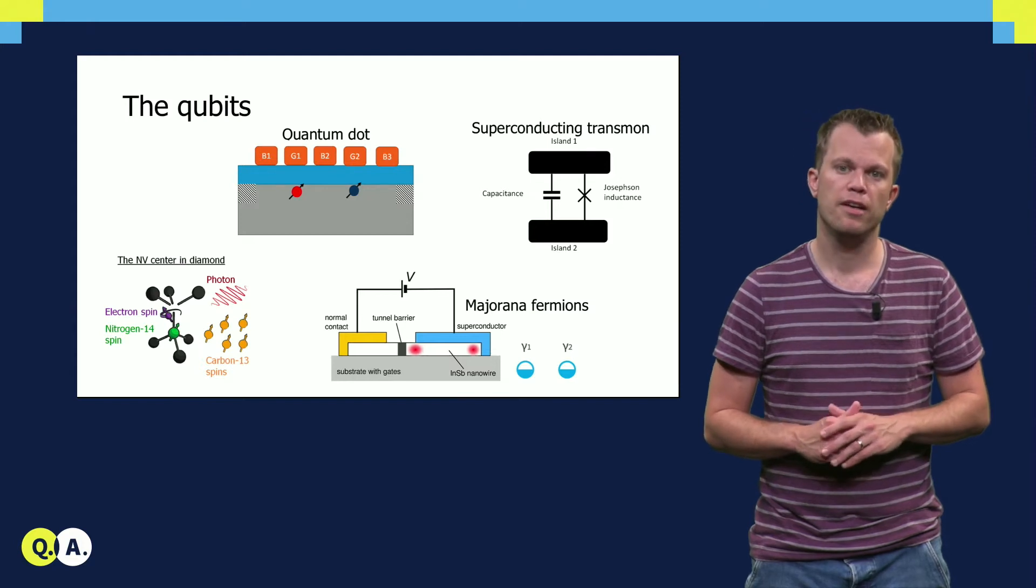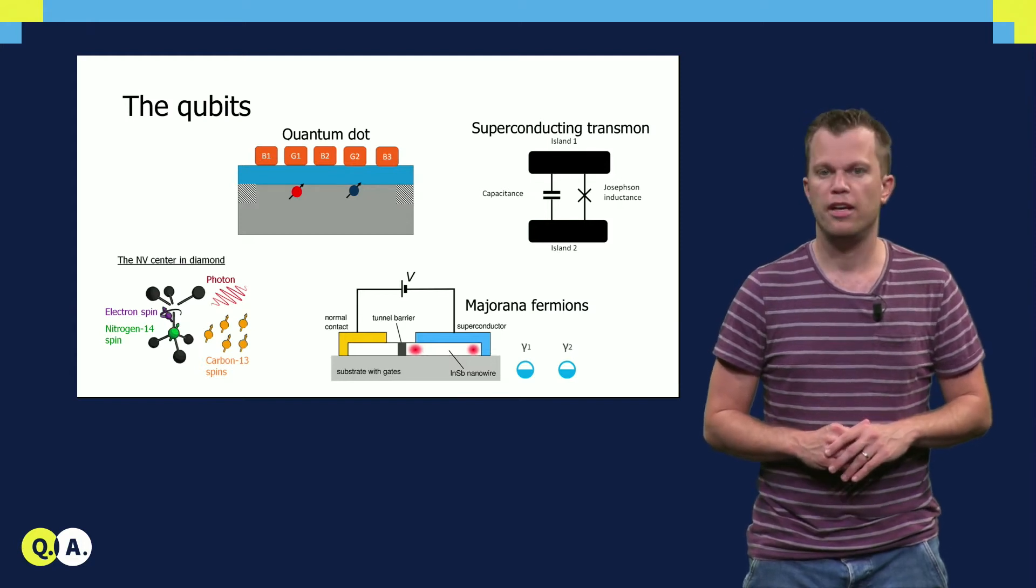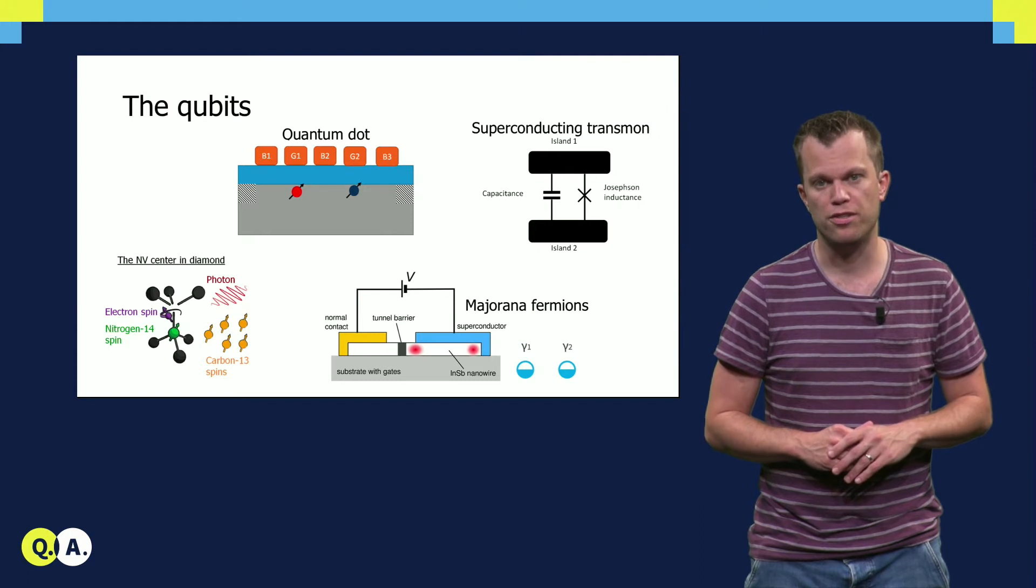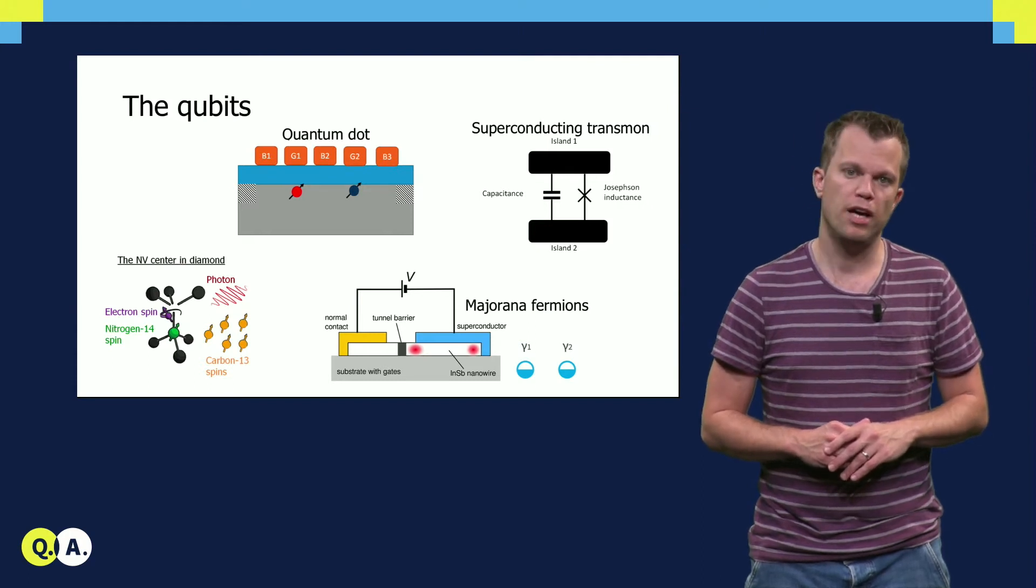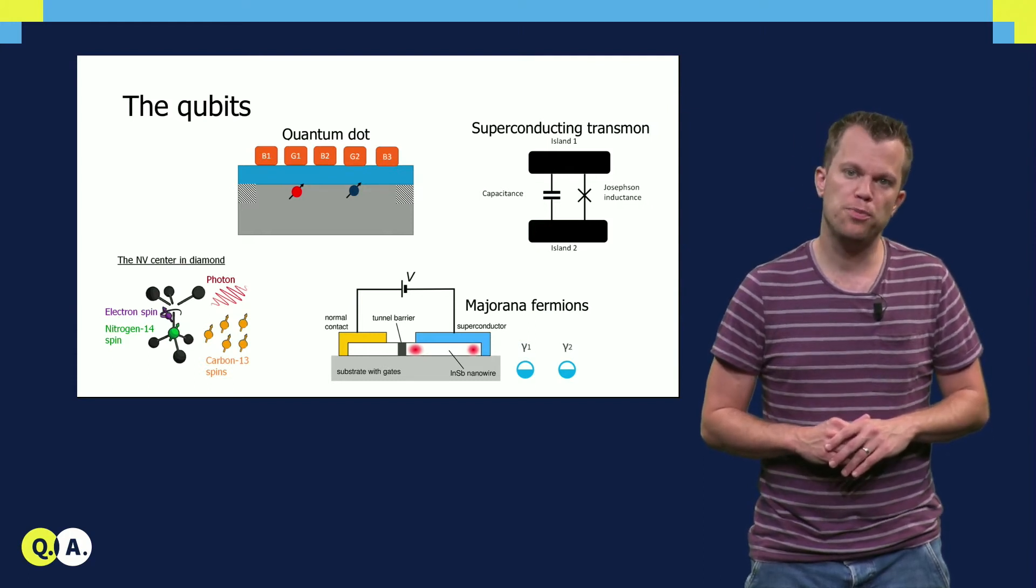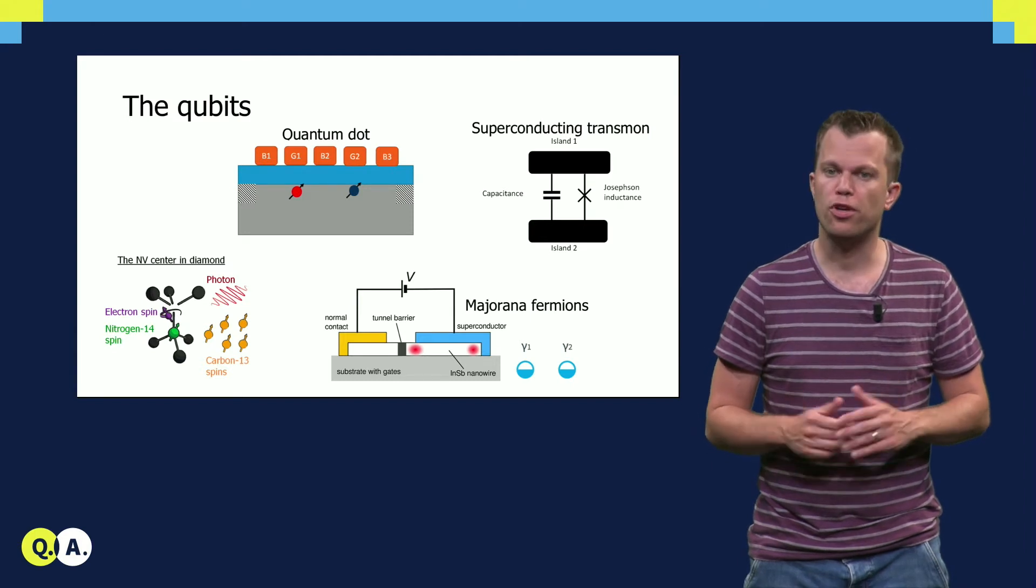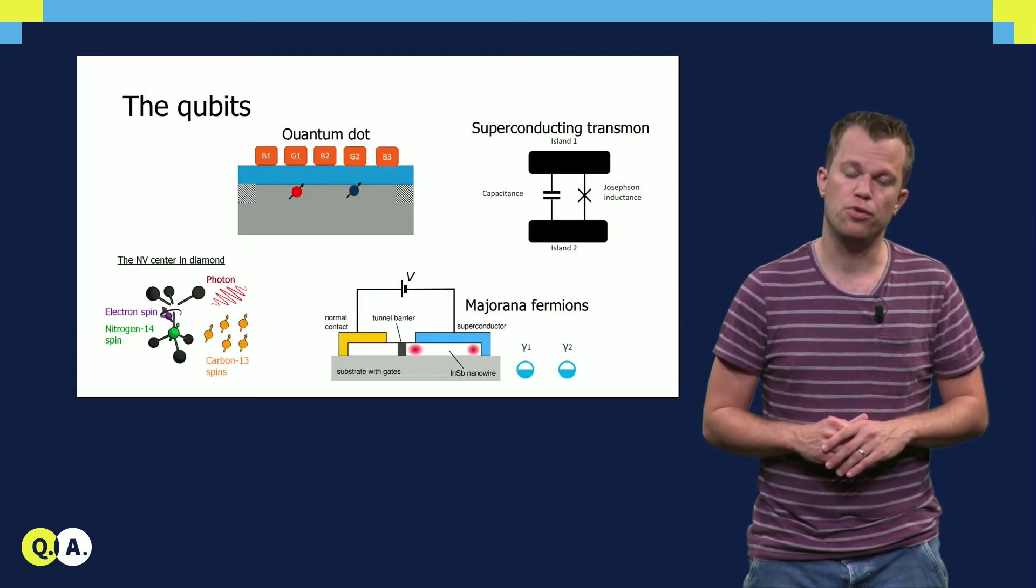In addition, clever qubit designs enable to decrease a qubit sensitivity to noise. For spin and superconducting qubits, sweet spots exist where to first order qubits are insensitive to certain noise.